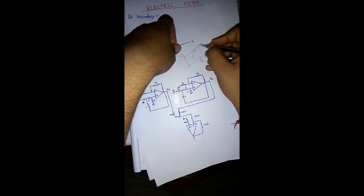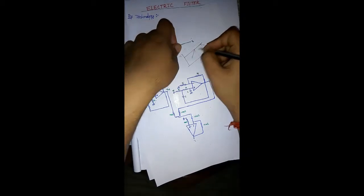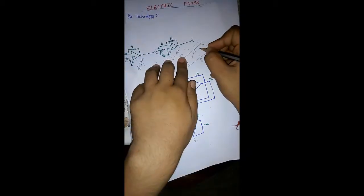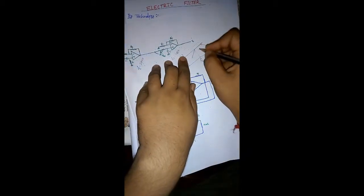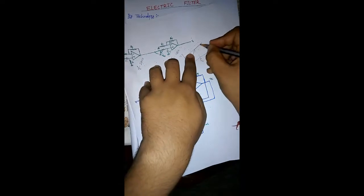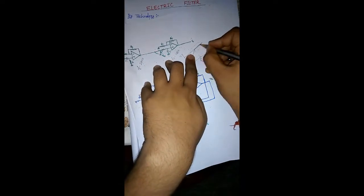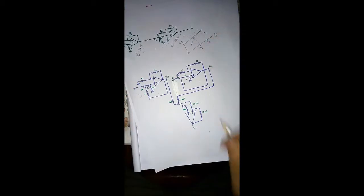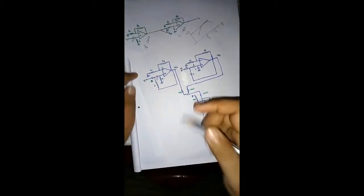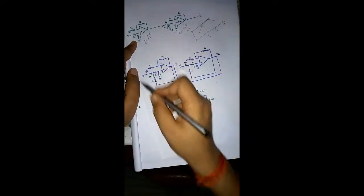The voltage is high at the band region, and since this has a flat passband it is called the Butterworth filter characteristics.